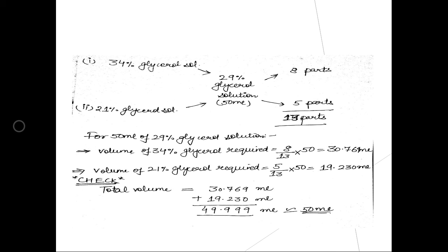Now for the calculation for 50 ml of 29% glycerol solution: out of 13 total parts, we take 8 parts from the 34% solution and 5 parts from the 21% solution. To find the exact volume, apply the formula: volume required = (number of parts of that solution / total parts) × required volume. For 34% glycerol: 8/13 × 50.